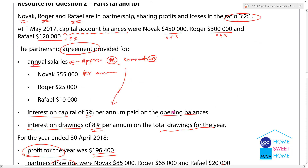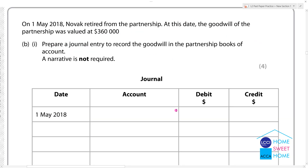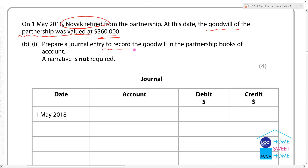Number 2. On 1st May 2018, a new partner was admitted to the partnership. At this date, the new part of the partnership was valued and goodwill was valued in the partnership. Prepare a journal entry to record the goodwill in the partnership books.